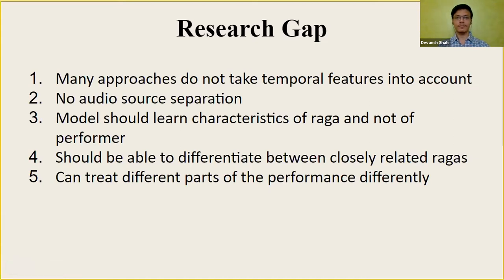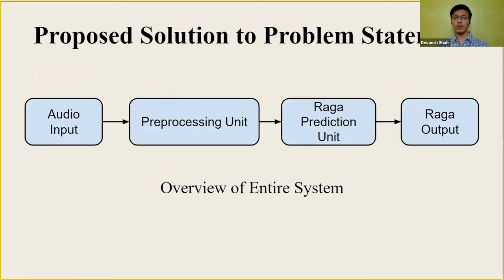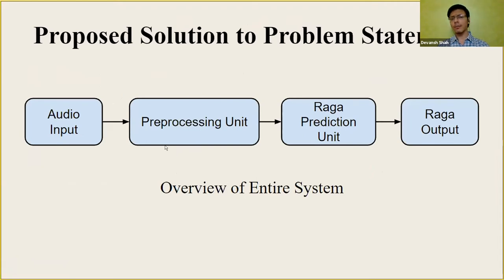We also have a hypothesis that we can treat different parts of a performance in different ways — I'll come to that later. Moving on to the proposed solution: at the highest level, there is an audio input — either recorded from a microphone or an MP4 file — which passes through our preprocessing unit converting that audio into some internal state, and then the Raga prediction unit takes that input and predicts the Raga.